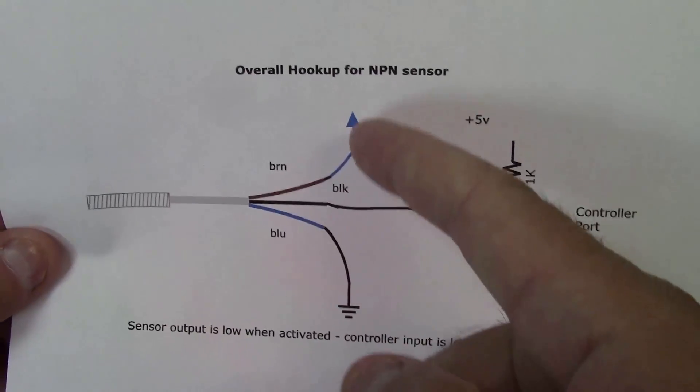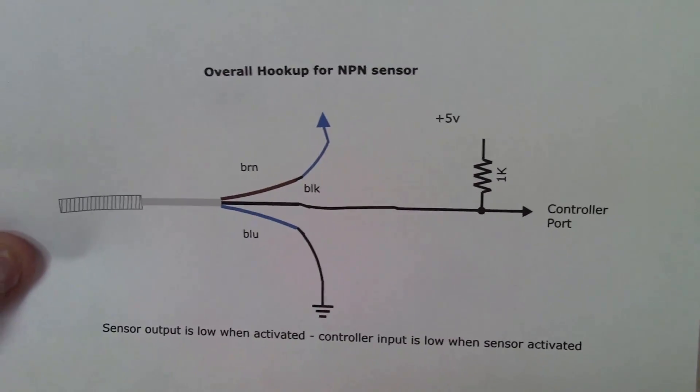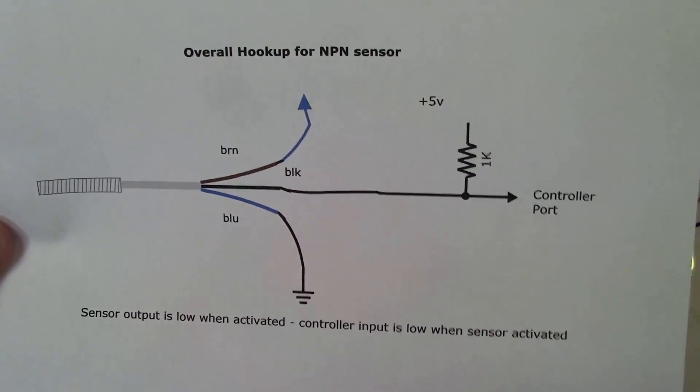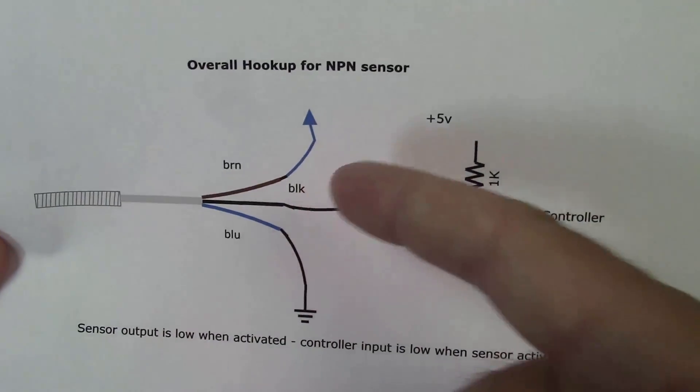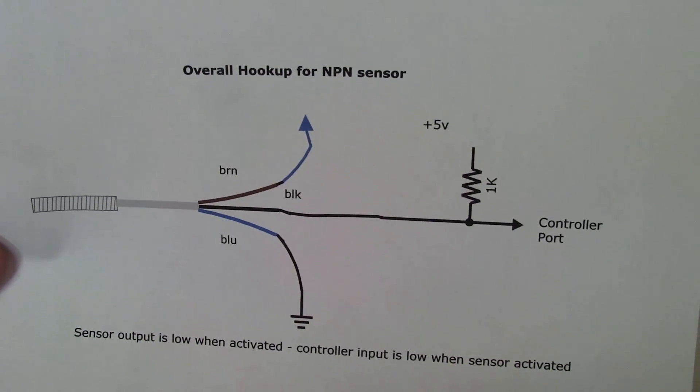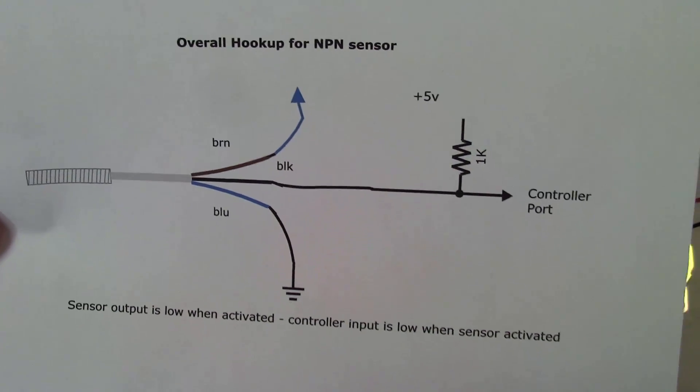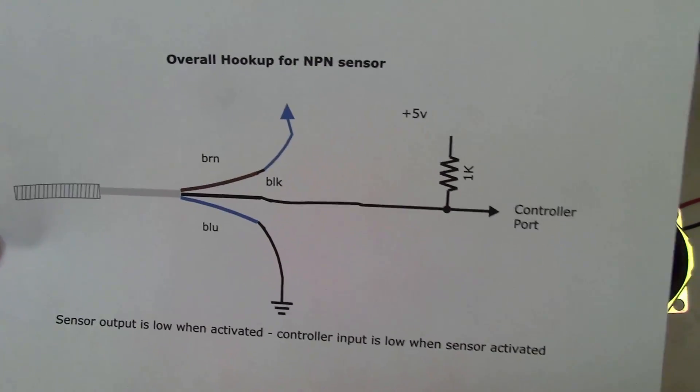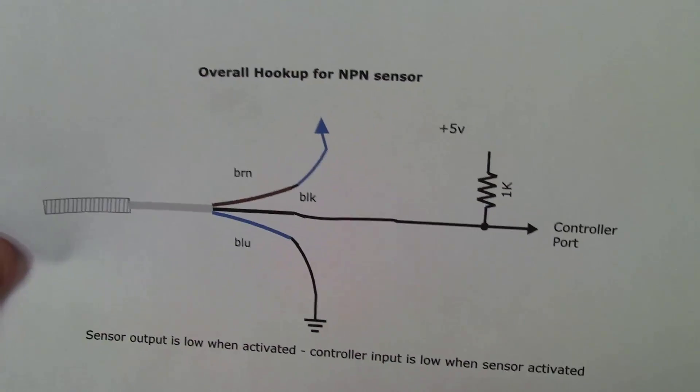Our brown wire here will go to whatever our voltage source is for the sensor. In this particular case I'm using a 9 volt battery but the sensor will handle a voltage between 10 and 30 volts and most sensors even though we're below the 10 volts that the sensor specifies a 9 volt battery works fine.